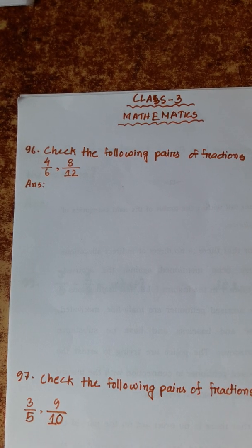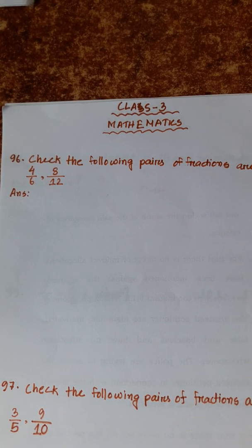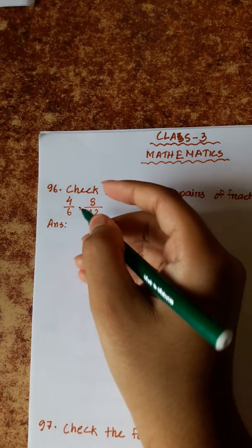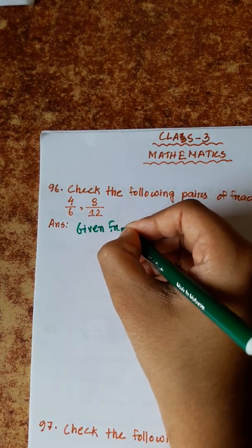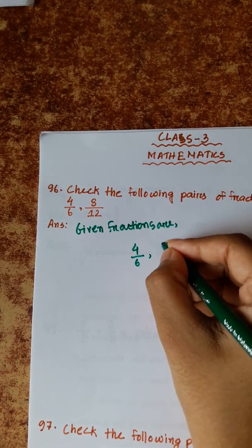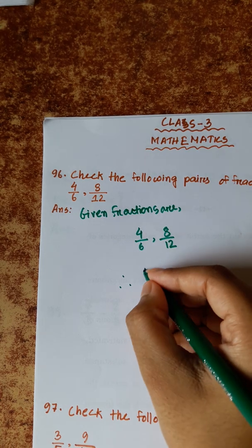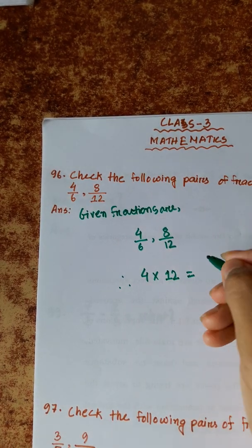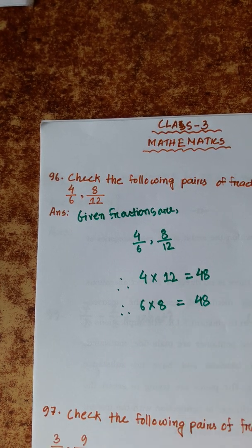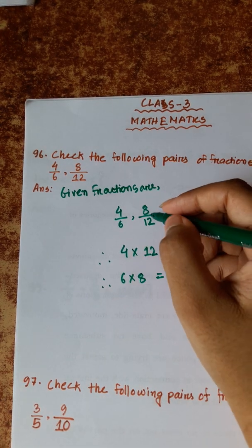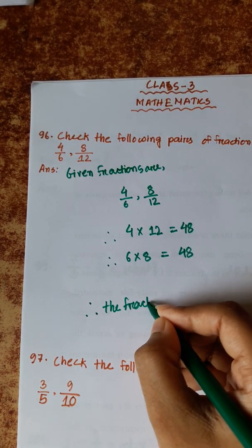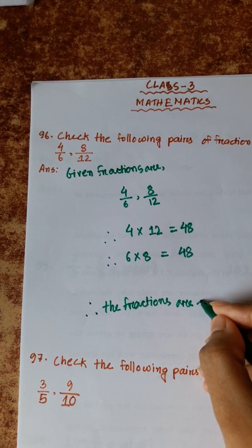Question 96: Check whether the following pair of fractions are equivalent or not. Given fractions: 4/6 and 8/12. Using cross multiplication: 4 × 12 = 48 and 6 × 8 = 48. Both results are the same, which means these two fractions are equivalent to each other.